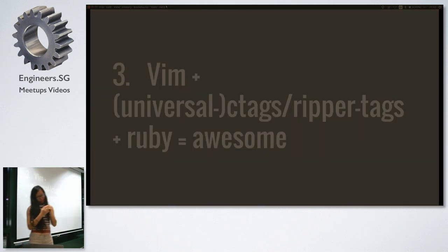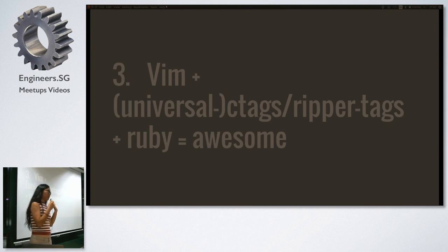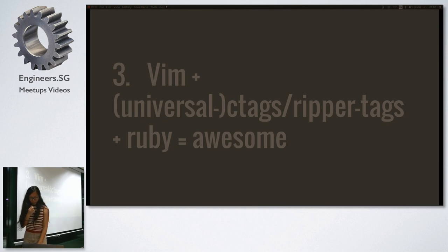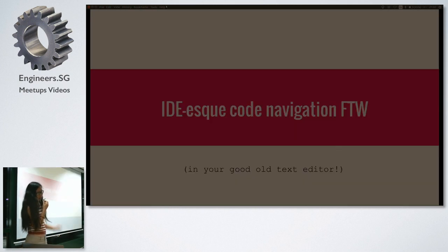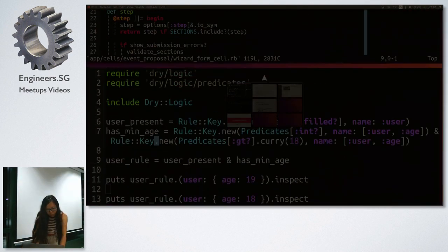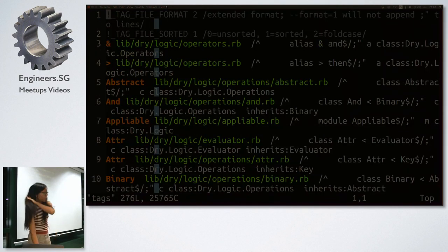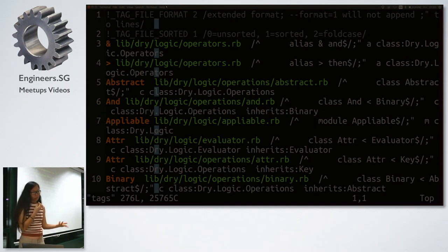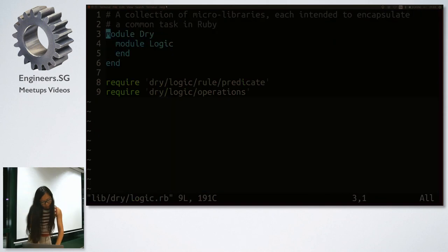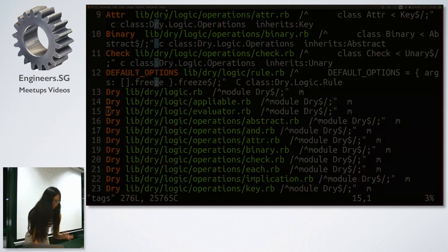That's all for currying. Tip number three is more of a productivity tip: Vim plus universal ctags plus ripper-tags plus Ruby. The main thing here is actually ctags. This allows me to have IDE-style code navigation in my editor. I can jump to specific tags with key bindings in Vim — so if I'm curious about a module or a function, I can jump straight to it. I actually used this just now to navigate the dry-logic gem source.